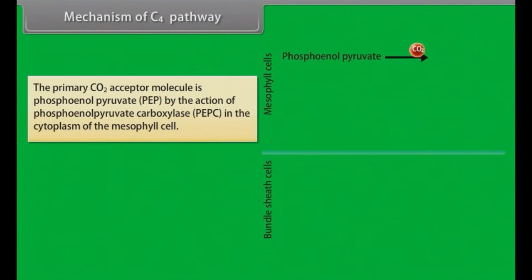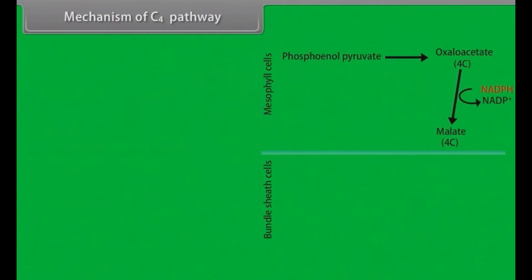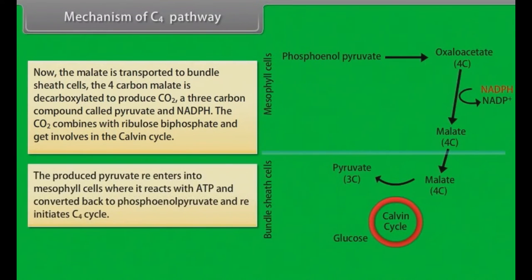Mechanism of C4 pathway: The primary carbon dioxide acceptor molecule is phosphoenol pyruvate by the action of phosphoenol pyruvate carboxylase in the cytoplasm of mesophyll cell. It produces a 4-carbon compound oxaloacetate and it is converted into another 4-carbon compound called malate and produces NADPH. Now, the malate is transported to bundle sheath cells. The 4-carbon malate is decarboxylated to produce carbon dioxide, a 3-carbon compound called pyruvate, and NADPH. The carbon dioxide combines with ribulose bisphosphate and gets involved in the Calvin cycle. The produced pyruvate re-enters into mesophyll cells where it reacts with ATP and is converted back to phosphoenol pyruvate and re-initiates C4 cycle.